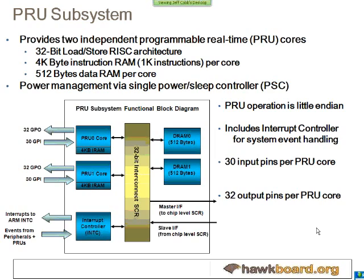This is a block diagram of the PRU subsystem. There are two PRU cores, each with their own individual instruction RAM and data RAM connected through a switch, so they can both access either data RAM. You can implement a separate program on each core running independently, or implement two parts of the same algorithm on each core and have them share data. Each core also has 32 general-purpose outputs and 30 general-purpose inputs for external interfacing.